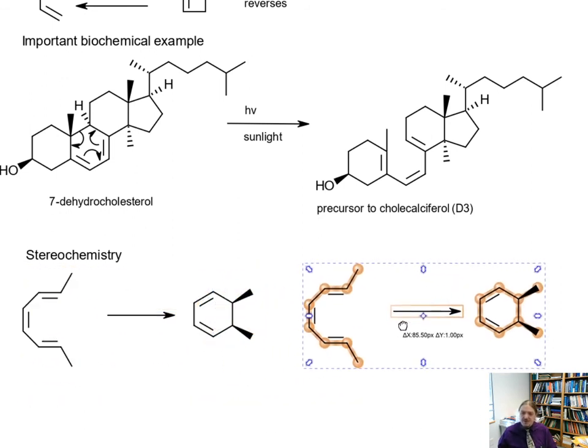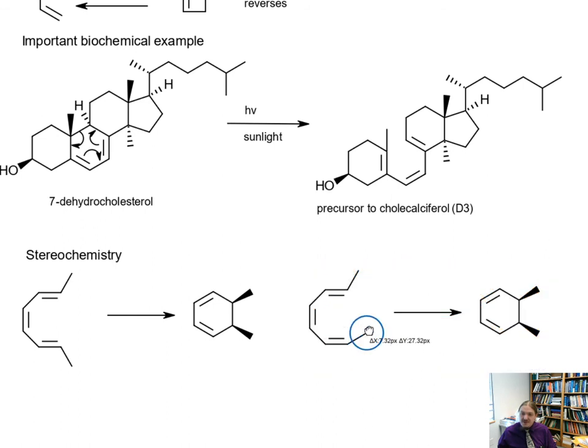It undergoes electrocyclic ring closure to form stereospecifically this diastereomer. But if I were to switch the stereochemistry of the original compound, I would get a different diastereomer. And this one is chiral, so we get the enantiomer. We have to be clear about that.